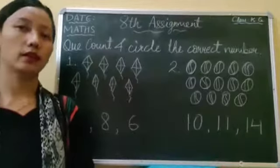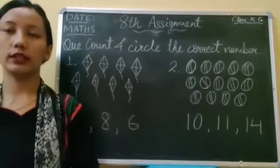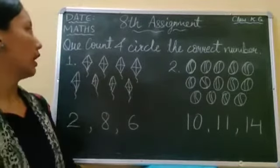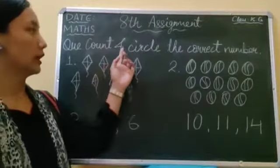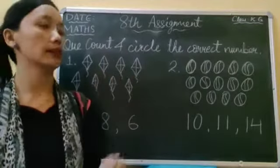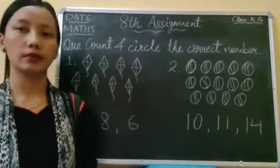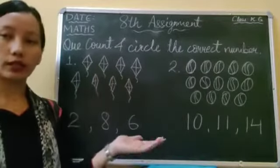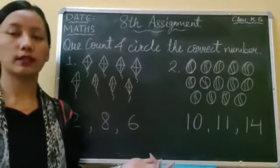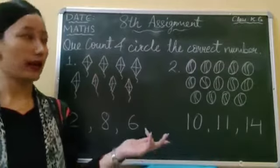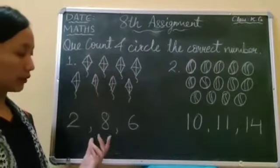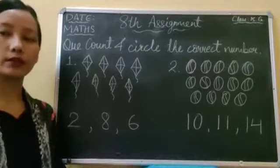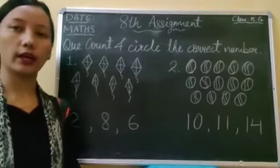Here, let's do this activity. Students, here you have to count and circle the correct number. You have to count the given objects and choose, or you can circle, the correct number.